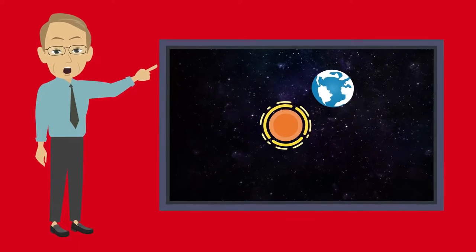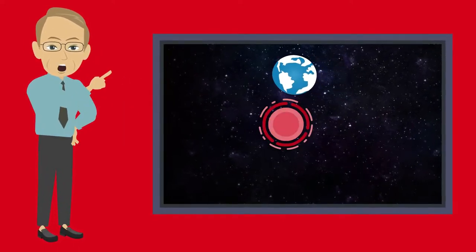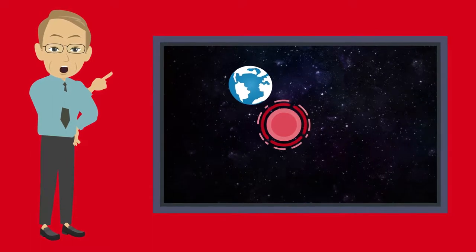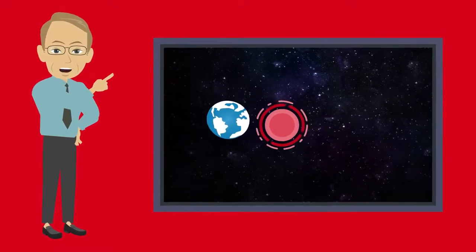Fortunately, the Sun doesn't have the final say in what happens to Earth, because the Sun won't become a red giant for another 5 billion years, and a lot can happen in that time.